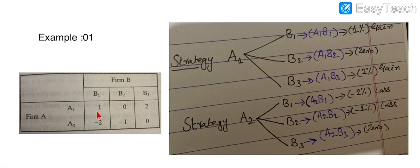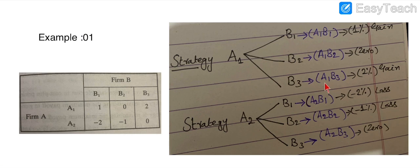Firm A gains while Firm B loses. When Firm A plays A1 and Firm B plays B2, the result is zero gain and zero loss. If Firm B plays B3, Firm A will lose two percent and Firm B will obtain a gain.